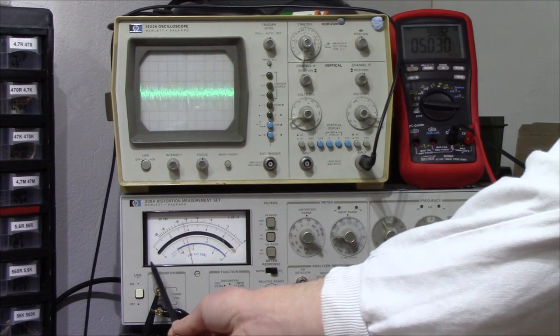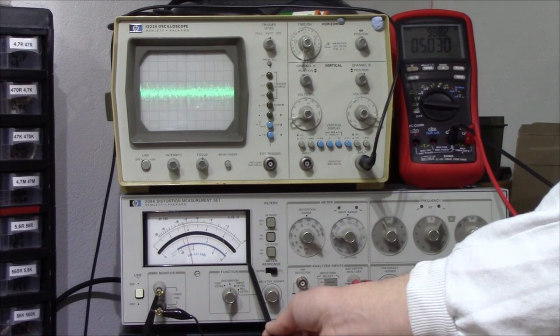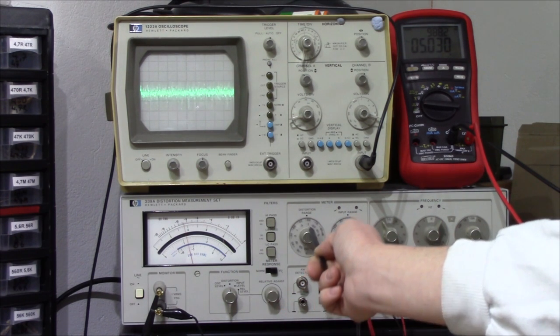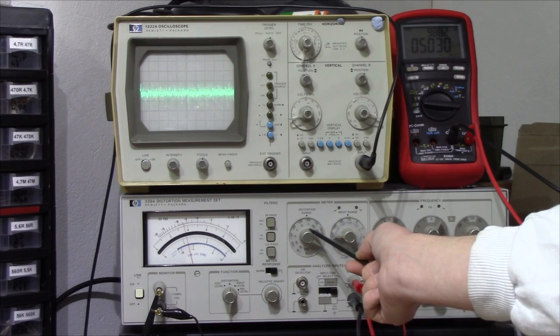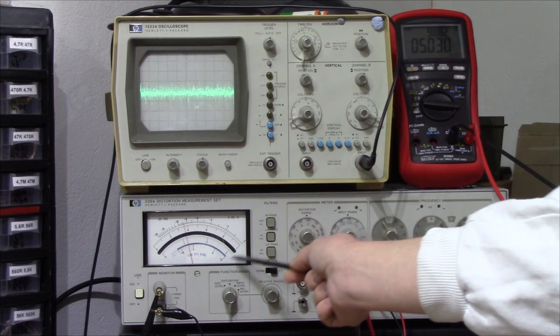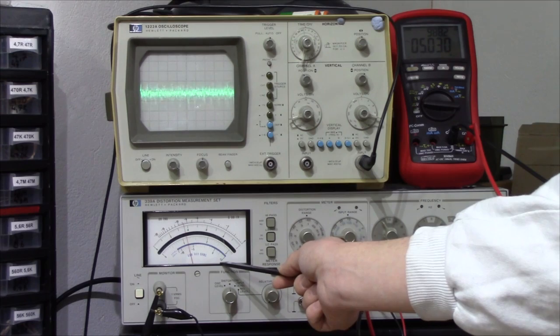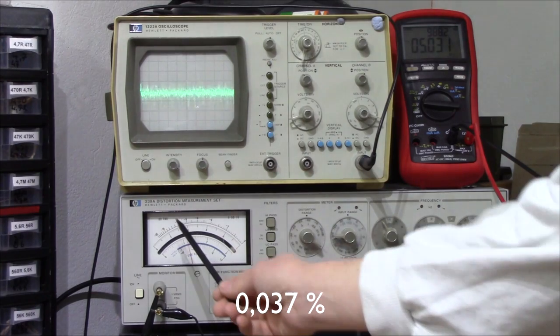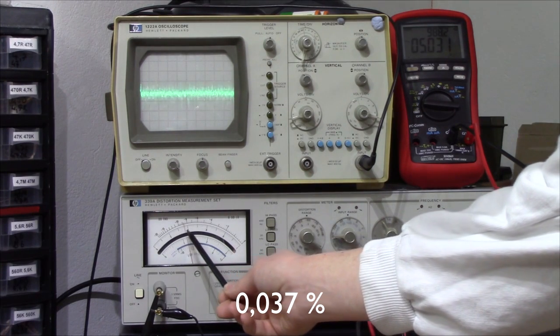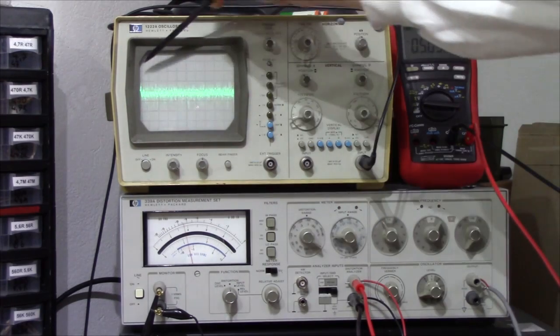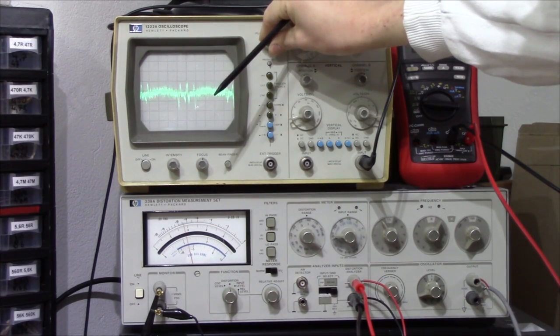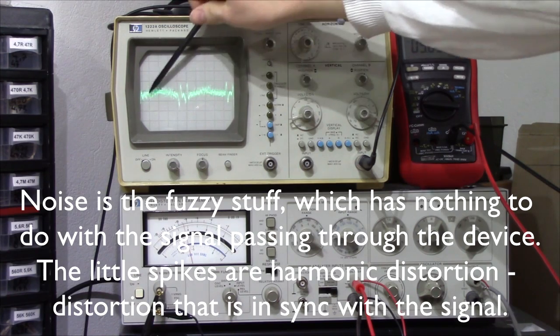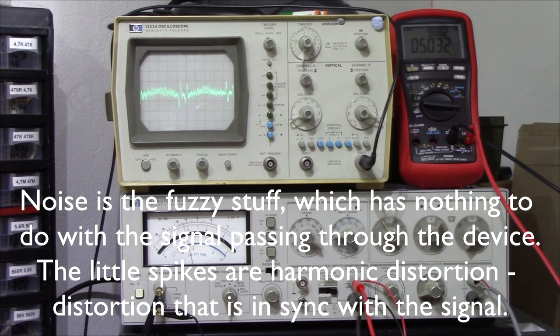Let's head on to the display of the distortion meter. It's set to 0.1% distortion full scale. That means when the arrow is here you have 0.1% distortion, when it's here it's 0.0. Right now it's reading about 0.037 or so, and it's dominated by noise. You can see there's some kind of harmonic distortion going on there, but it's not much, it's mostly noise. So that means the amplifier is not clipping and it's putting out a clean signal.